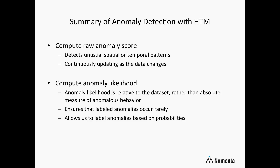To recap, this is a two-step process. The first step is computing the raw anomaly score by inspecting the state of the temporal memory — that tells us when there are unusual spatial or temporal patterns in the data, and it continuously updates as patterns change. Then, to normalize for noise, we compute the anomaly likelihood, giving us a metric relative to the specific data stream that allows us to label anomalies based on probabilities.